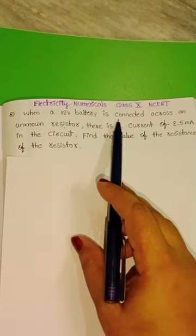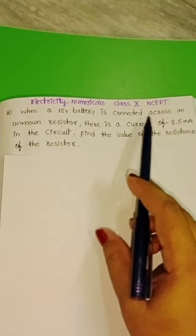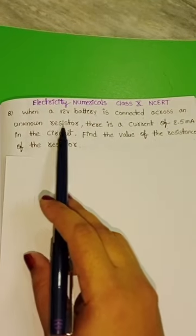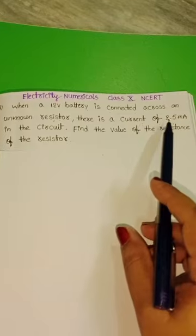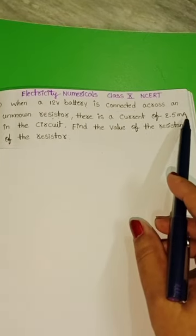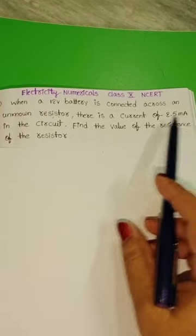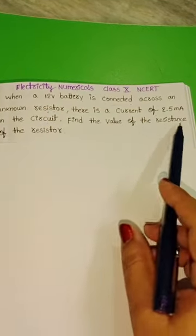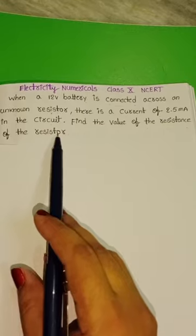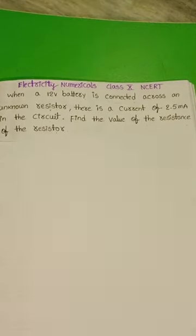When a 12V battery is connected across an unknown resistor, there is a current of 2.5mA in the circuit. Find the value of resistance of the resistor.